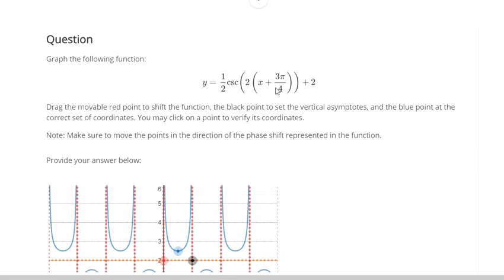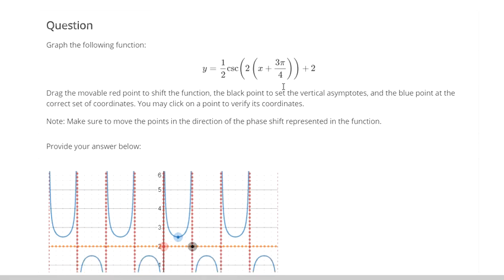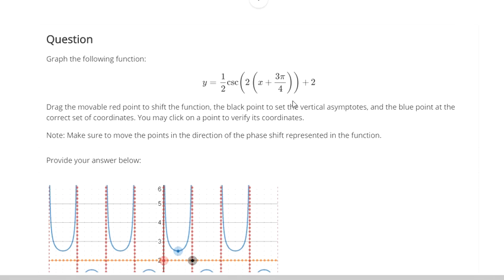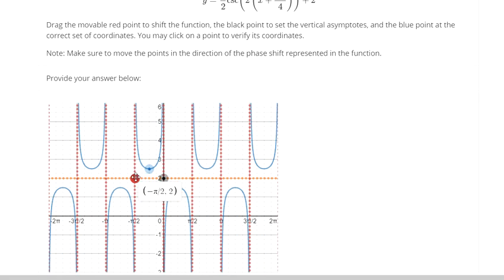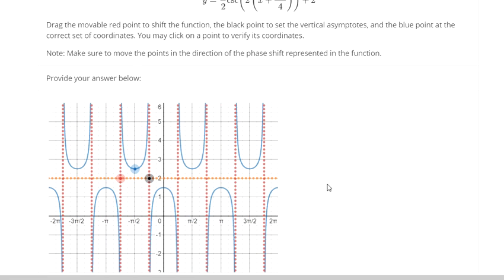Now the phase shift, plus 3 pi over 4, that actually means you go 3 pi over 4 units to the left. So you can do that by dragging the red dot.